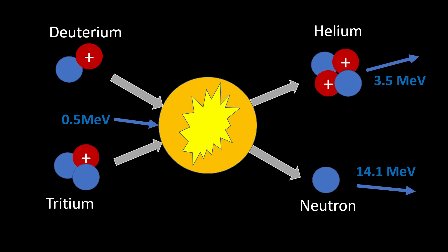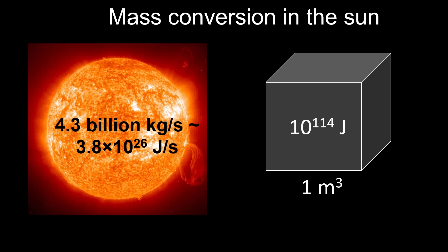We have just discussed the conversion of mass into energy in a fusion reaction. And similar fusion processes occur in our sun. If we look at how much mass is being converted into energy in the sun every second, this is 4.3 billion kilograms. Quite a lot actually.